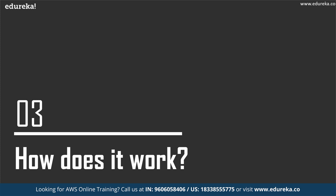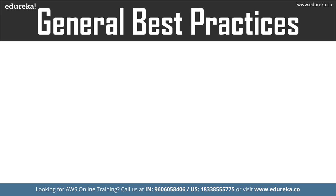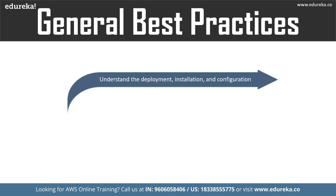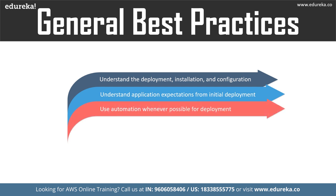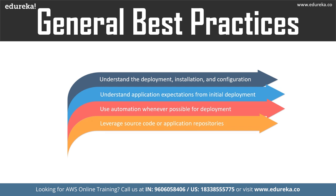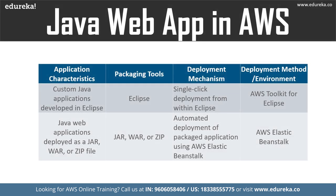Before seeing how to deploy a Java web application, let me share a few best practices. The size and installation complexity of web applications can vary greatly, so there is rarely a one-size-fits-all solution. Best practices include: understanding the deployment, installation, and configuration characteristics of the application; understanding scalability, availability, and backup and recovery requirements; using automation whenever possible for deployment and tasks where consistency is important; and leveraging source code or application repositories to protect your application.